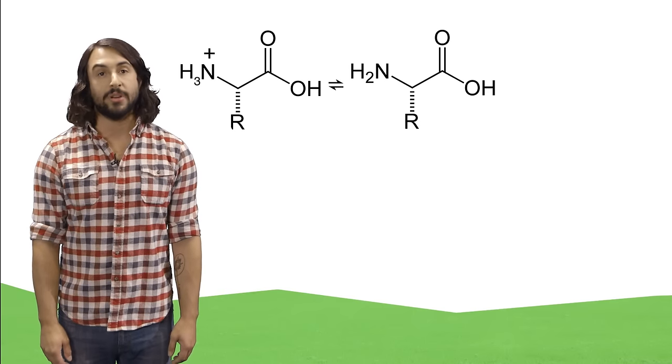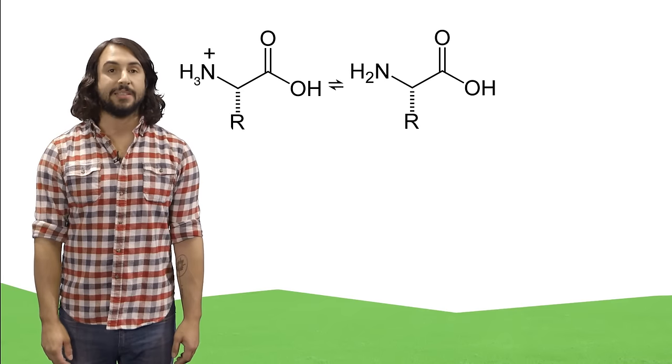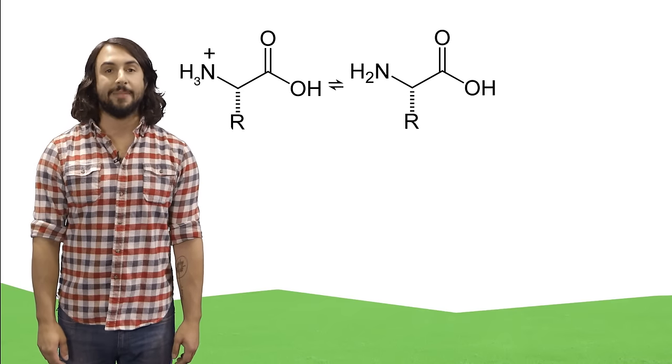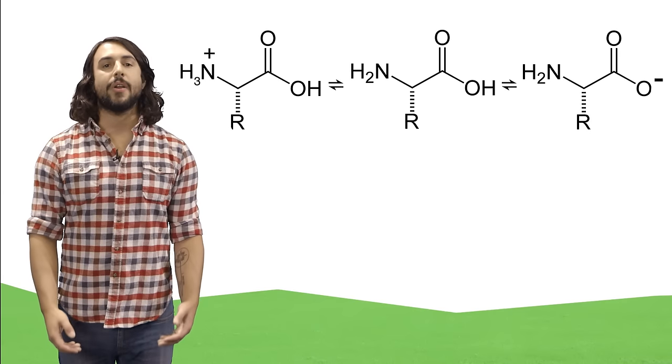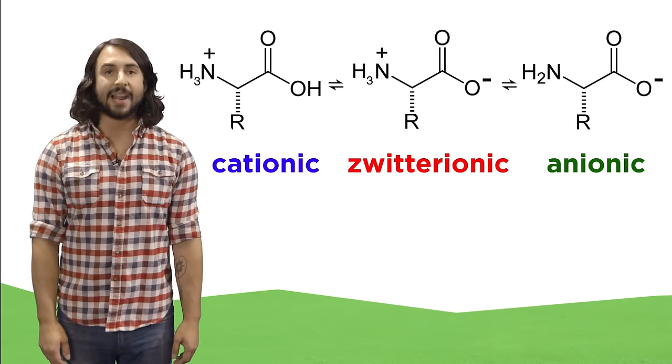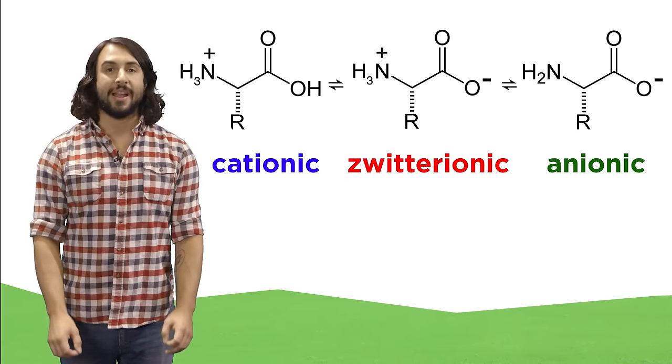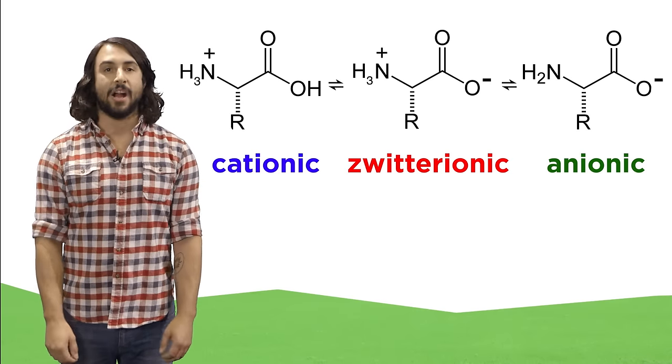The amino group can be protonated, since it is slightly basic, and the carboxyl group can be deprotonated, since it is slightly acidic, and there are equilibria between the cationic form, the zwitterionic form, and the anionic form.